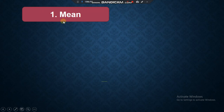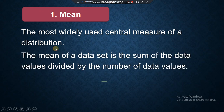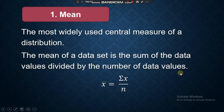First, let's have the mean. The mean is the most widely used central measure of a distribution. The mean of the data set is the sum of the data values divided by the number of data values — basically, it is called average. The mean equals the summation of x (your data or score) divided by n, the number of data.